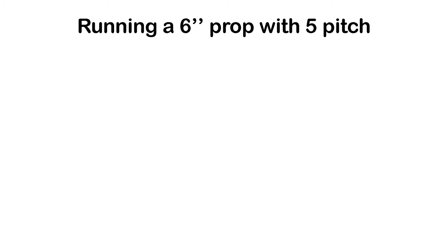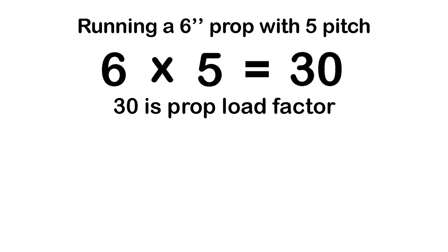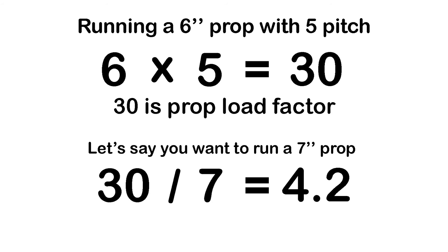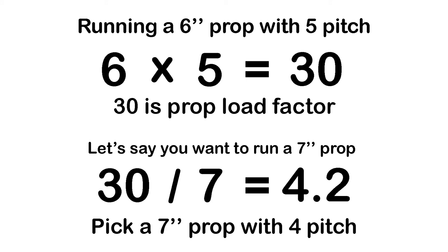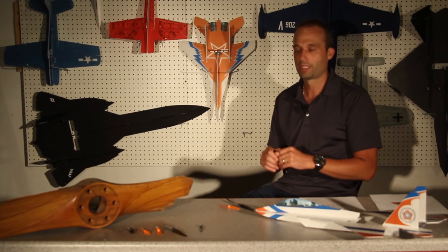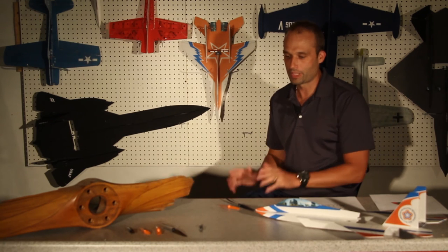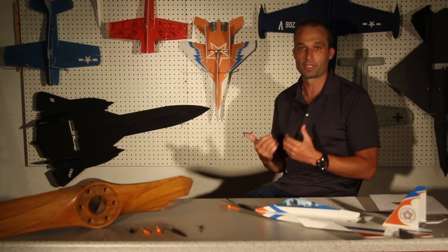Let me show you a simple mathematical equation to determine a good substitute for that particular propeller. Let's say you're running a 6-inch propeller with a 5 pitch. All you have to do is multiply 6 times 5 to get 30, where 30 is kind of like a prop load factor. Now let's say you have a 7-inch propeller — you would take 7 and divide it into 30, which gives you 4.2. So the ideal pitch on a 7-inch propeller would be 4, and that's going to be very similar to the 6 at a 5 pitch. I've done this for many, many years and it's worked very, very well for me.